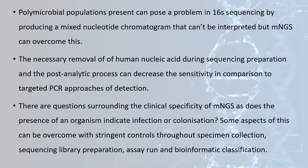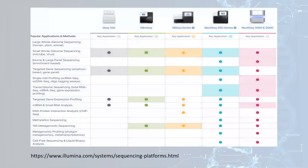Some aspects can be overcome with stringent controls through specimen collection, aseptic technique, sequencing library preparation, assay run, and bioinformatic classification. Once we streamline those bioinformatic software pipelines, we should have a relatively easy go-to system. There are a number of benchtop sequencers ready to go, particularly from Illumina — the iSeq up to the next generation 1000 and 2000 machines — available for small whole genome sequencing for microbes and viruses, and they could be very valuable to a laboratory, potentially replacing several rooms of molecular suite equipment with half a bench.